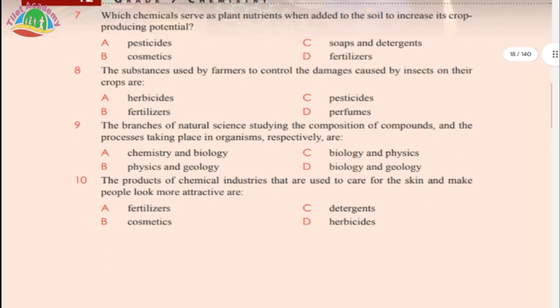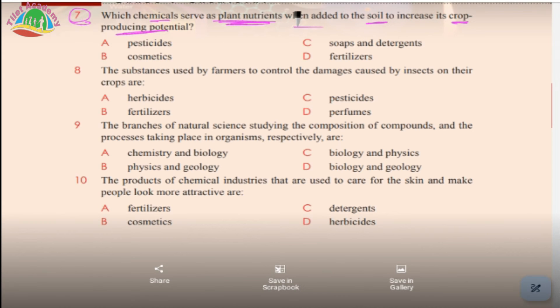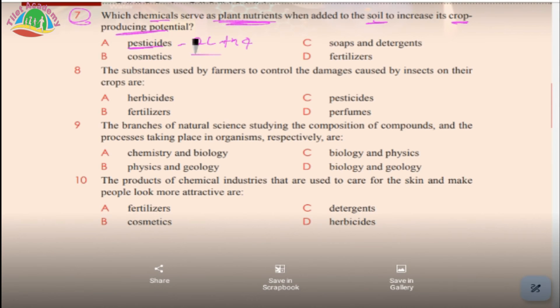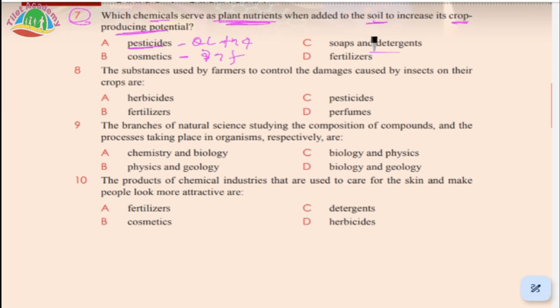Which chemicals serve as plant nutrients when added to the soil to increase crop producing potential? A. pesticide, B. cosmetics, C. soaps and detergents, D. fertilizers. The answer is fertilizer - fertilizer is a plant nutrient.